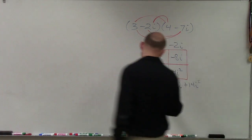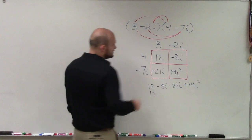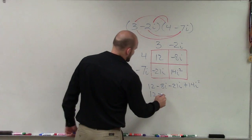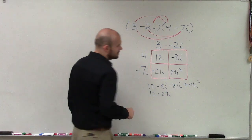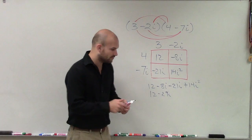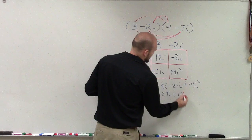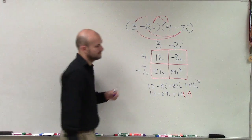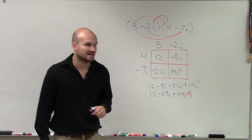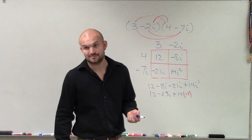So I can combine these into 12. Negative 8 minus 21i is a negative 29i. And then I have 14i squared. Well, remember 14i squared is 14 times i squared, which is a negative 1. You have to remember that i squared is negative 1. It gets a lot of students.